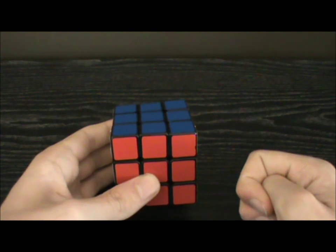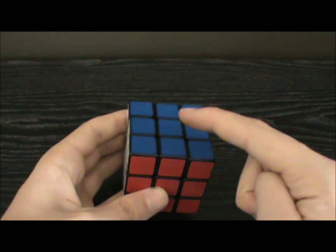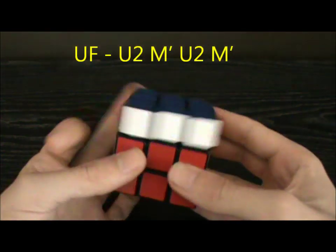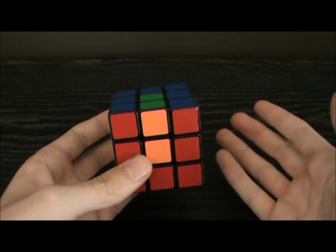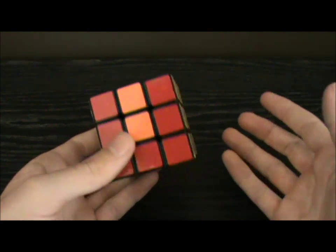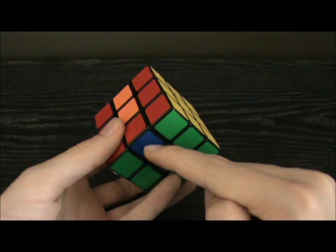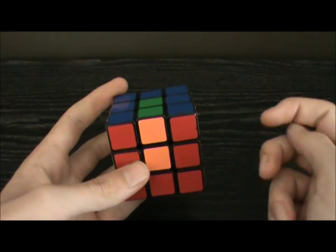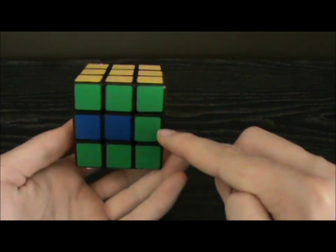Now I'll show you the four algs you have to know. If you want to shoot to UF, you do this. And if you want to shoot to DB, you do the inverse. Now, normally this piece would belong there, but since the M slice is out by an M2, we have to actually shoot to BD.